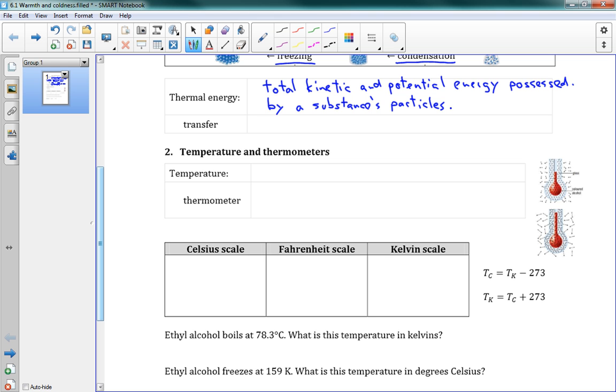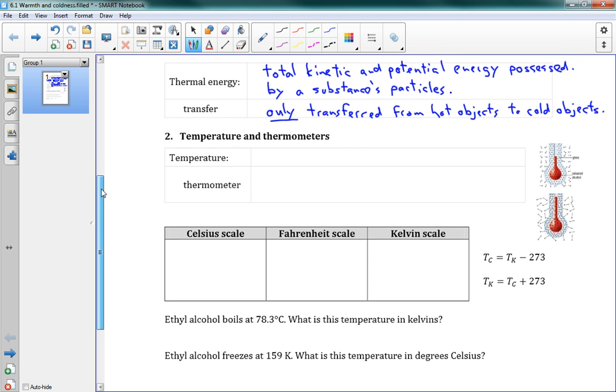It's this idea of heat, temperature, it's all related. Now, thermal energy is only transferred from hot objects to cold objects. That's how thermal energy is transferred. A hot object has more thermal energy, and when it comes in contact with a colder object, it gives it some of its thermal energy.